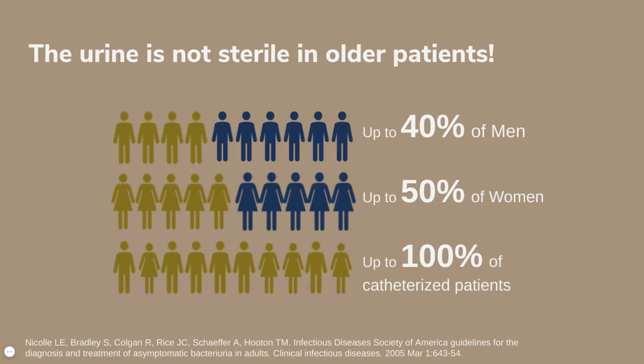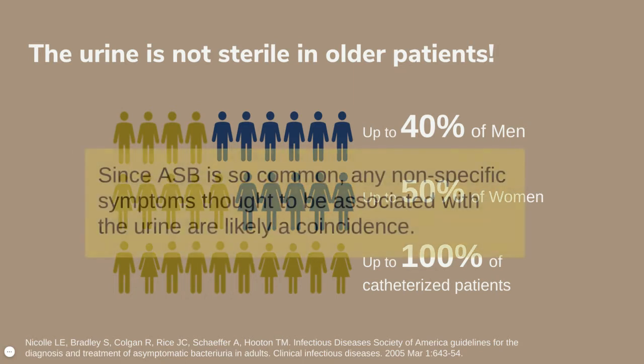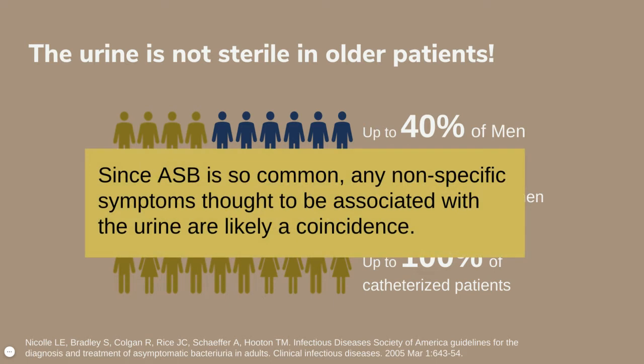ASB is very common and it depends a lot on the population. If you were to sample older men, about 40% of them will have bacteria in the urine at any given time. Similarly, up to 50% of women will have asymptomatic bacteriuria. And catheterized patients — virtually all of them — will have bacteria in the urine after a week or so of having a catheter in place. So the key point here is that the old school teaching that the urine is normally sterile is incorrect when thinking about older patients.